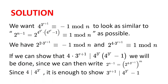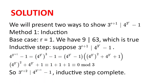Since 4 divides 4 to the power of 3 to the power of r, we need to show that 3 to the power of r plus 1 divides 4 to the power of 3 to the power of r minus 1, and we will be done. We will present two ways to show this.